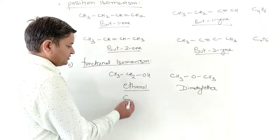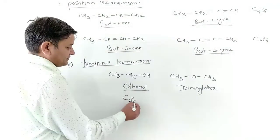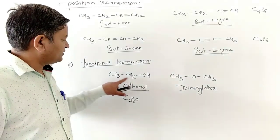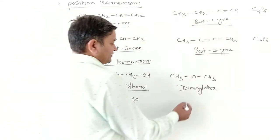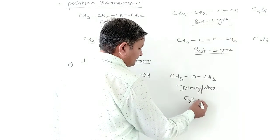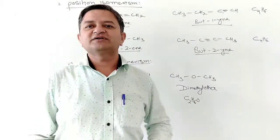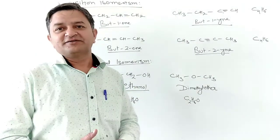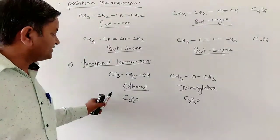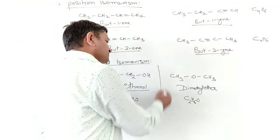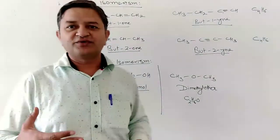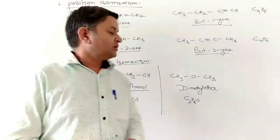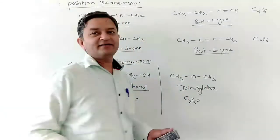Looking at the count: carbon — 2, hydrogen — 6, and O — 1. Similarly here, carbon — 2, hydrogen — 6, and O — 1. The molecular formula is the same, but the property is entirely different. This is ethanol and this is dimethyl ether. The property of this is entirely different due to the change in the functional group. Here the functional group is OH (called hydroxyl), and here between carbon-carbon the functional group is an ether linkage.